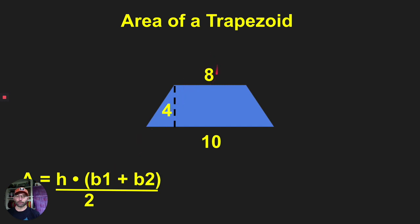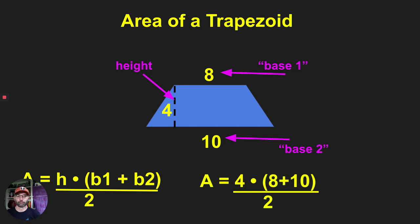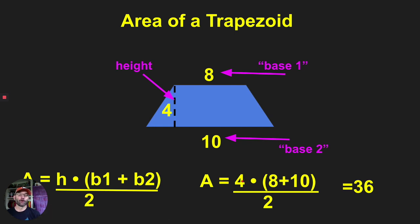All right — eight plus ten. Now it even labels it for you, so figure it out. You should have four times the quantity eight plus ten. Eight plus ten is eighteen, four times eighteen is seventy-two, and seventy-two divided by two is thirty-six.